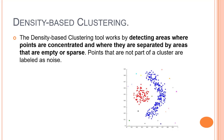Density-based clustering connects areas of high example density into clusters. Wherever you have high density, it takes that region as a cluster. This allows for arbitrary shape distributions — not just circular clusters but clusters of any shape, as long as they are in dense connected areas. These algorithms struggle with varying density and high dimensions. Notably, outliers — points that lie away from dense areas — are not counted as part of any cluster.